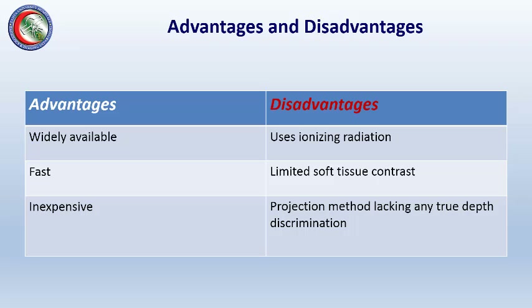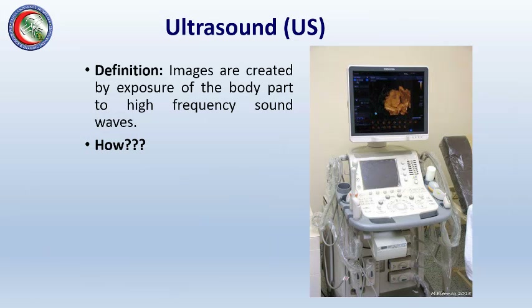The advantages of X-ray include that it's widely available, fast, and inexpensive. Its disadvantages are that it uses ionizing radiation, has limited soft tissue contrast, and the projection method lacks true depth discrimination. We will now move on to the next common modality: ultrasound.